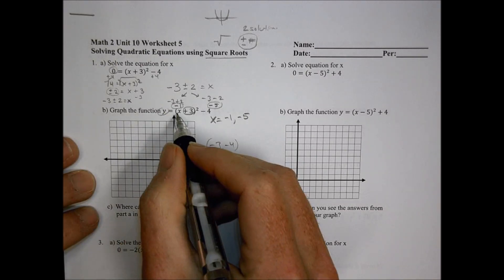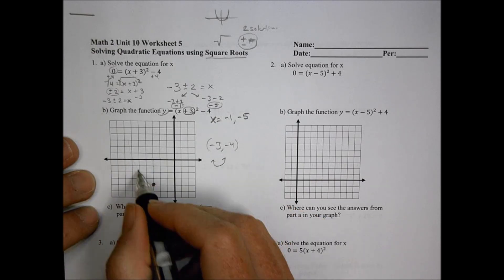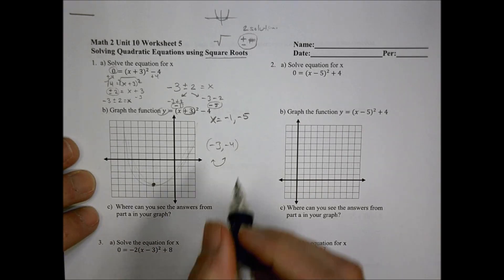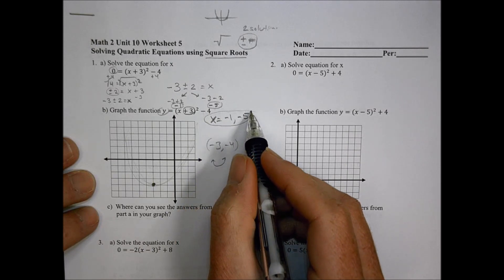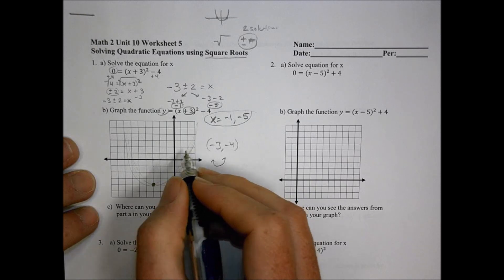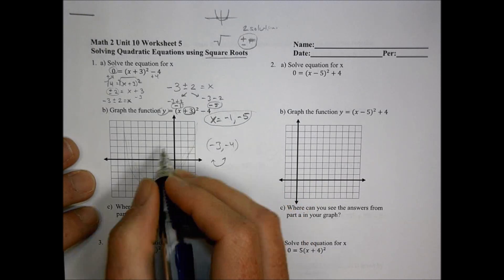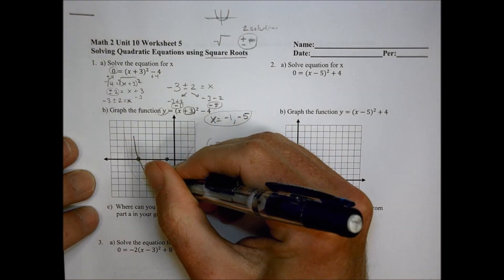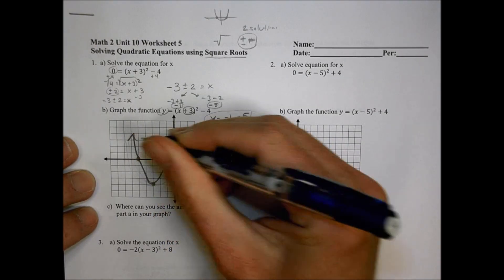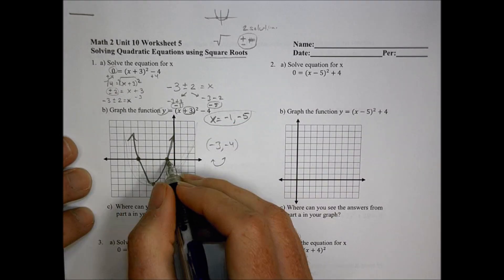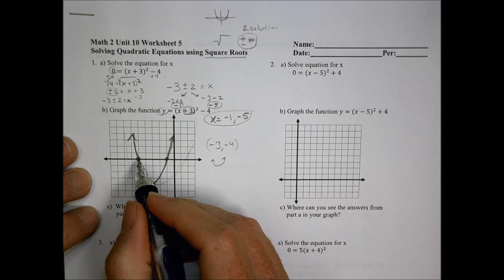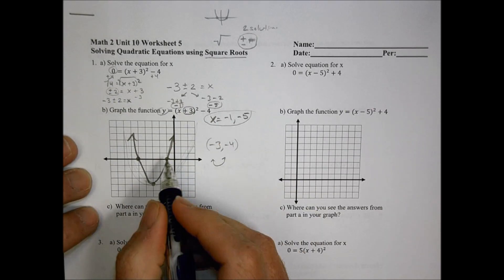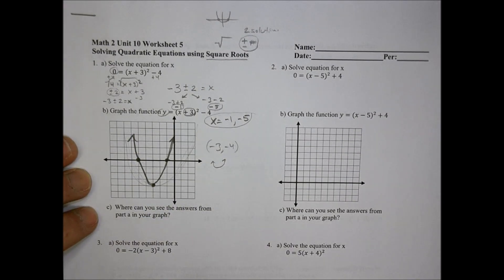Since it's positive, the parabola curves upward, so it's going to cross the x-axis two times. Where does it cross? When y equals zero, x is at negative 1 and negative 5. So I plot x-intercepts at negative 1 and negative 5, and graph the parabola through those points. The answers from part A show up as x-intercepts on the graph, and the vertex form tells me the vertex — so solving the equation gives me the x-intercepts.